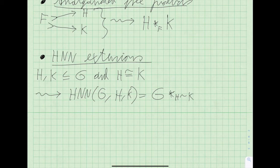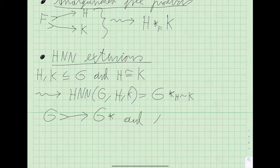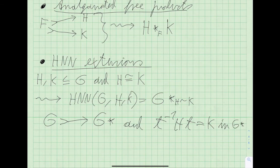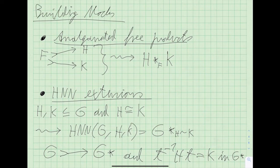The point is that G embeds naturally in this HNN extension, and there is some element that conjugates H onto K within the HNN extension. Because of time restrictions, I will focus on only one of these, and since I believe most have seen amalgamated free products in algebraic topology via the Seifert–Van Kampen theorem, I've chosen to focus on HNN extensions instead.